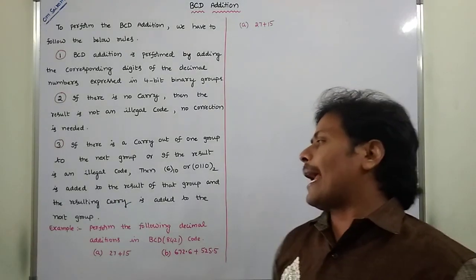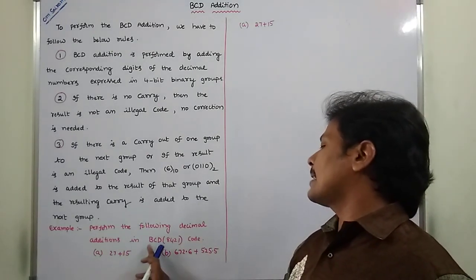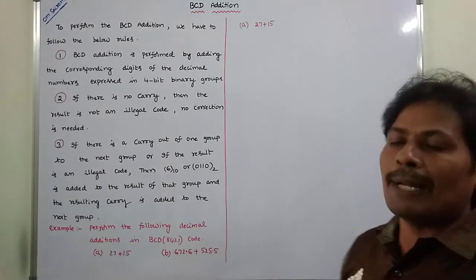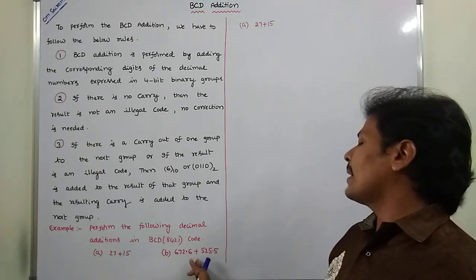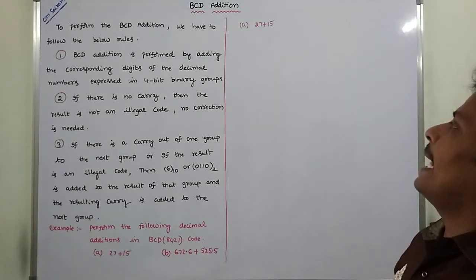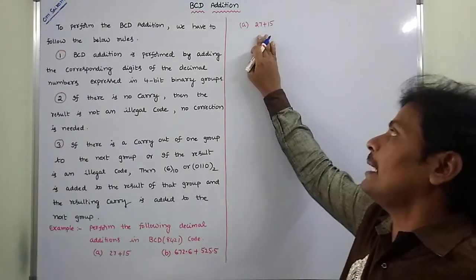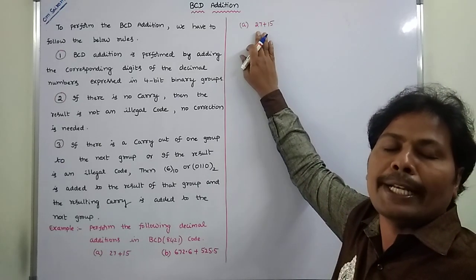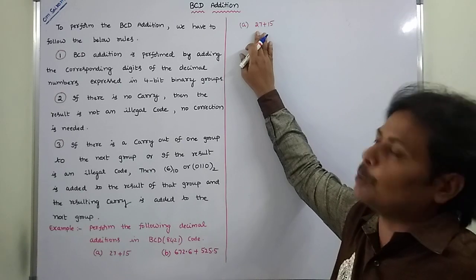Now we go for an example: perform the following decimal additions in BCD code. The first problem is 27 plus 15, and the second is 672.6 plus 525.5. First, we take the first problem. There are two decimal numbers, and each decimal number can be represented in a 4-bit binary group.